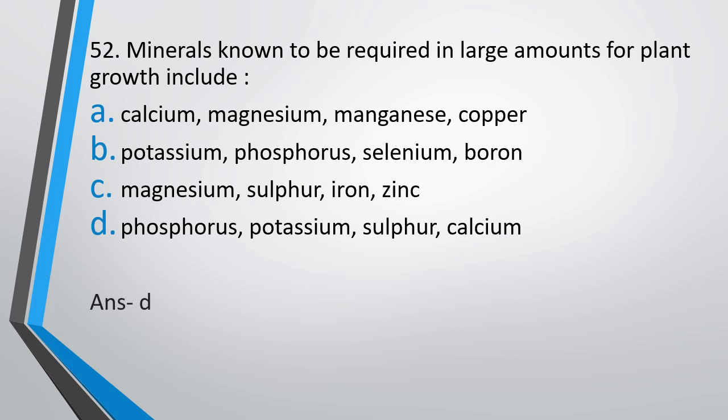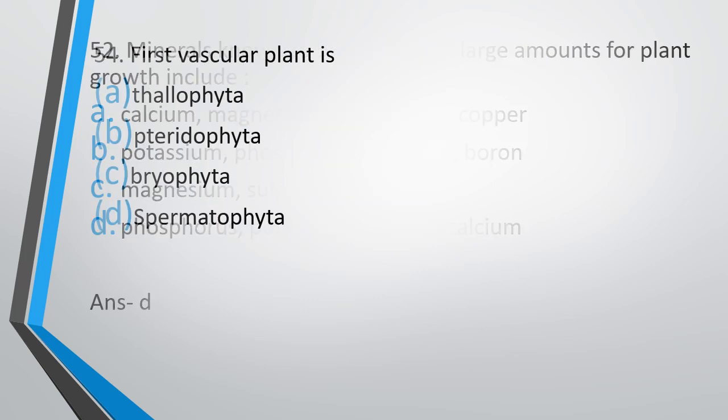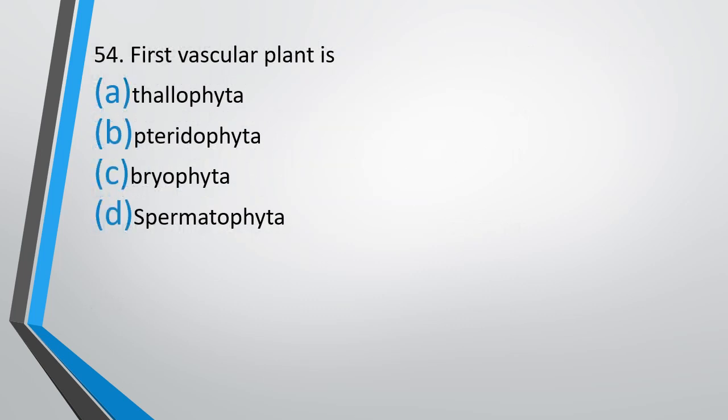The correct answer is option D: phosphorus, potassium, sulfur, and calcium. Question number 54: The first vascular plant is — thallophyte, pteridophyte, bryophyte, or spermatophyte? The correct answer is option B, pteridophyte.